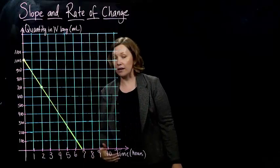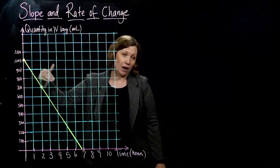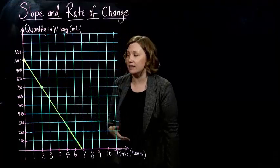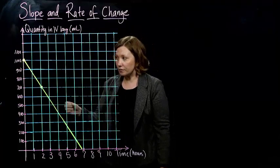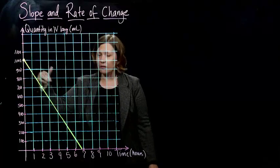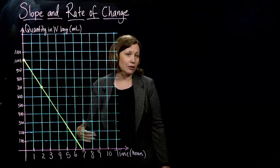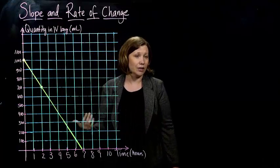So our graph, our linear relationship is going to be going downward. So as time increases, the quantity in that bag decreases, which makes sense. And so when you go down like this, this would be called a decreasing function.